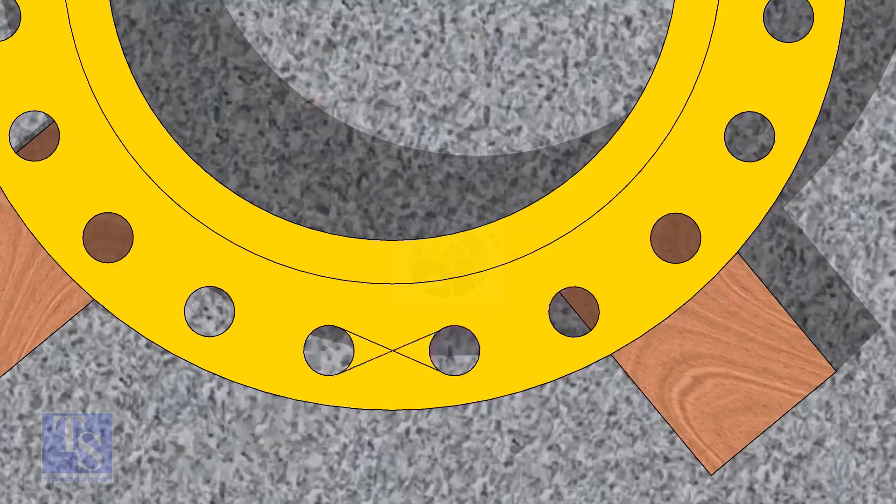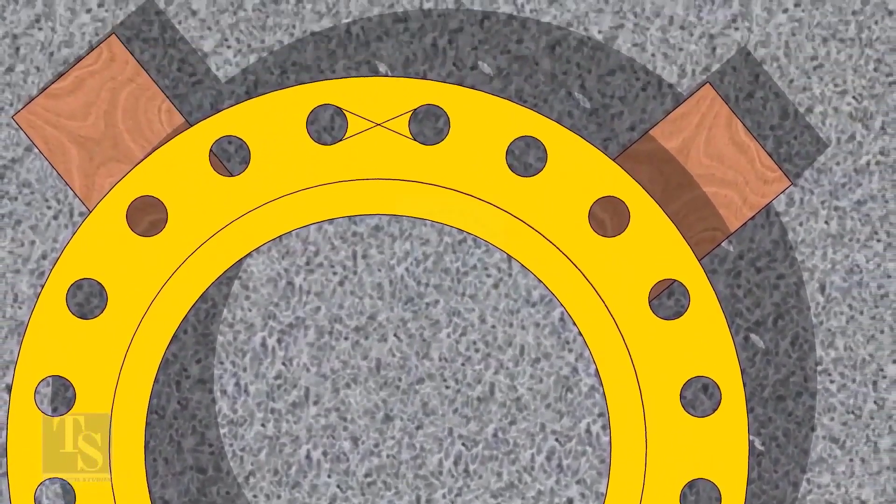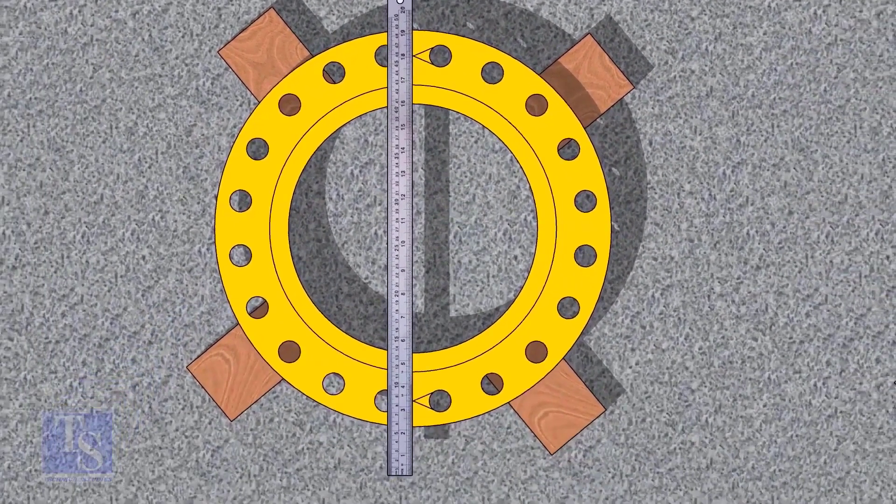Draw the center of the two holes on the opposite side. Draw the center line of the flange as shown.